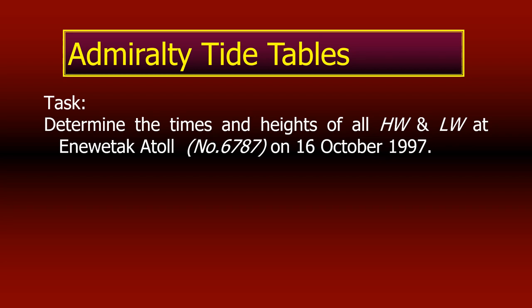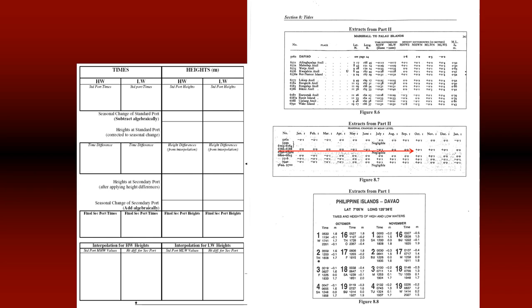If you understand one secondary port, you can use the same principles for any secondary port for any date. On the left hand side of the screen there is a pro forma that you can fill in as I show you, resulting in the final determination of the times and heights of high water and low waters. On the right side of the screen I have put the extracts from the Admiralty Tide Tables so you can easily refer to them. I'll go slow and if there are any questions write in the comment section.